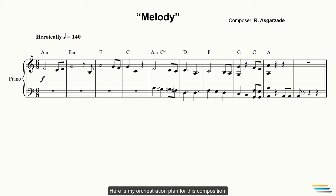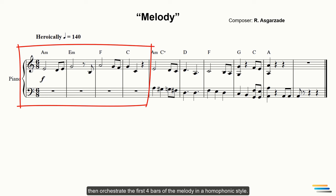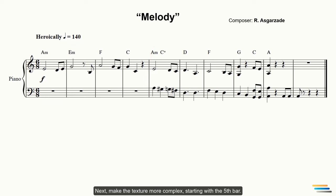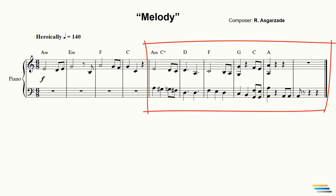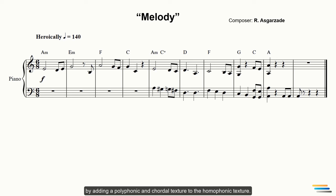Here's my orchestration plan for this composition. First, create an introduction. Then orchestrate the first four bars of the melody in a homophonic style. Next make the texture more complex starting with the fifth bar. So I want to create a climax by adding a polyphonic and a chordal texture. Let's do it.